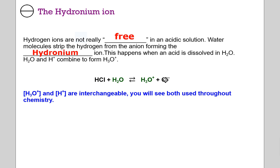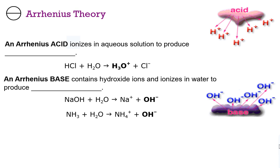And here that is in a balanced reaction. When we write things in this unit, to reiterate, hydronium and hydrogen are interchangeable. You will see both of them used throughout chemistry. We'll also refer to the hydrogen ion as a proton — we'll talk about that in a few minutes.